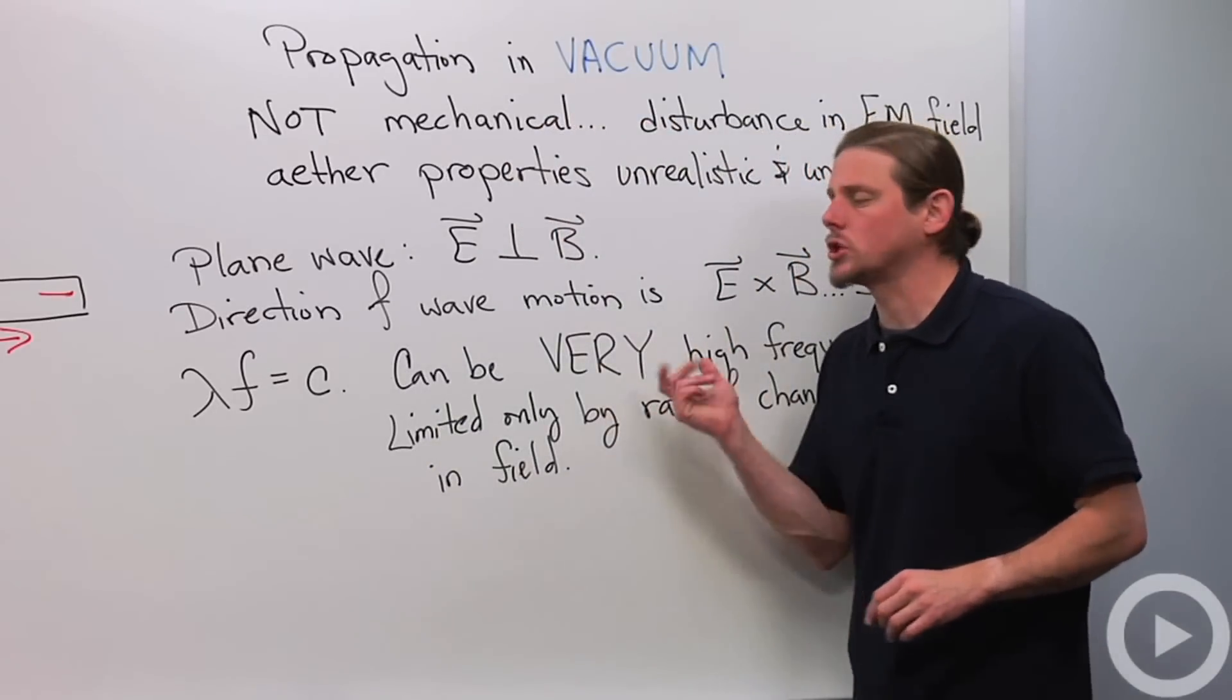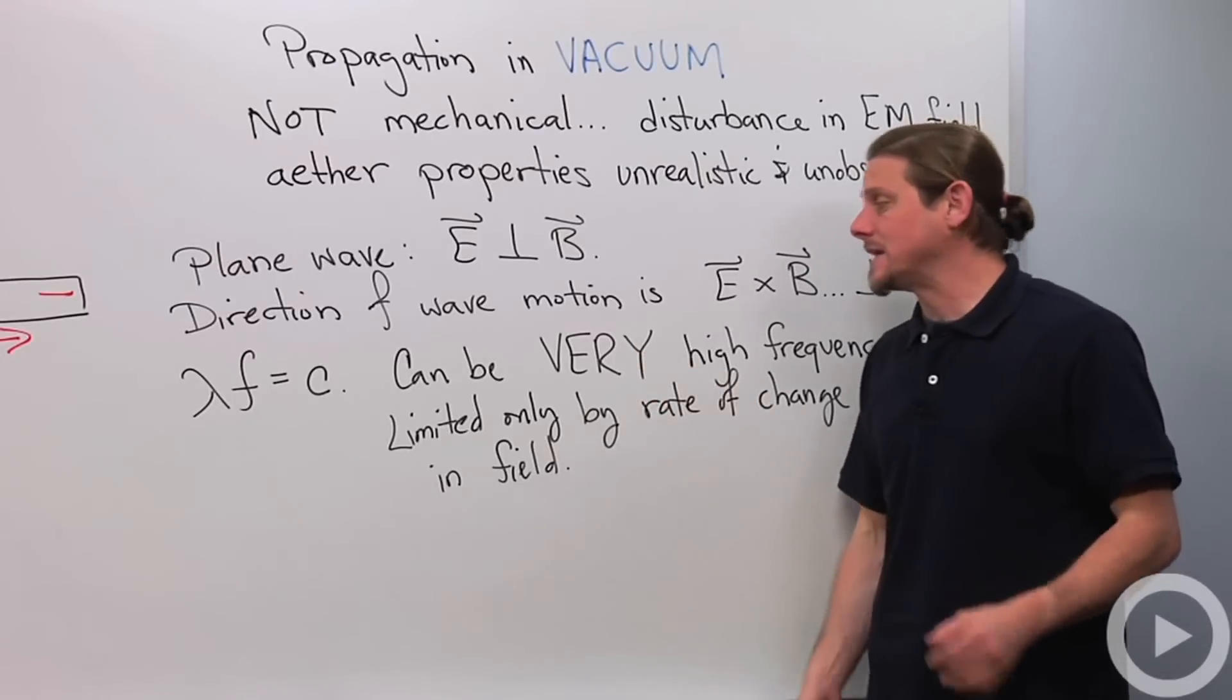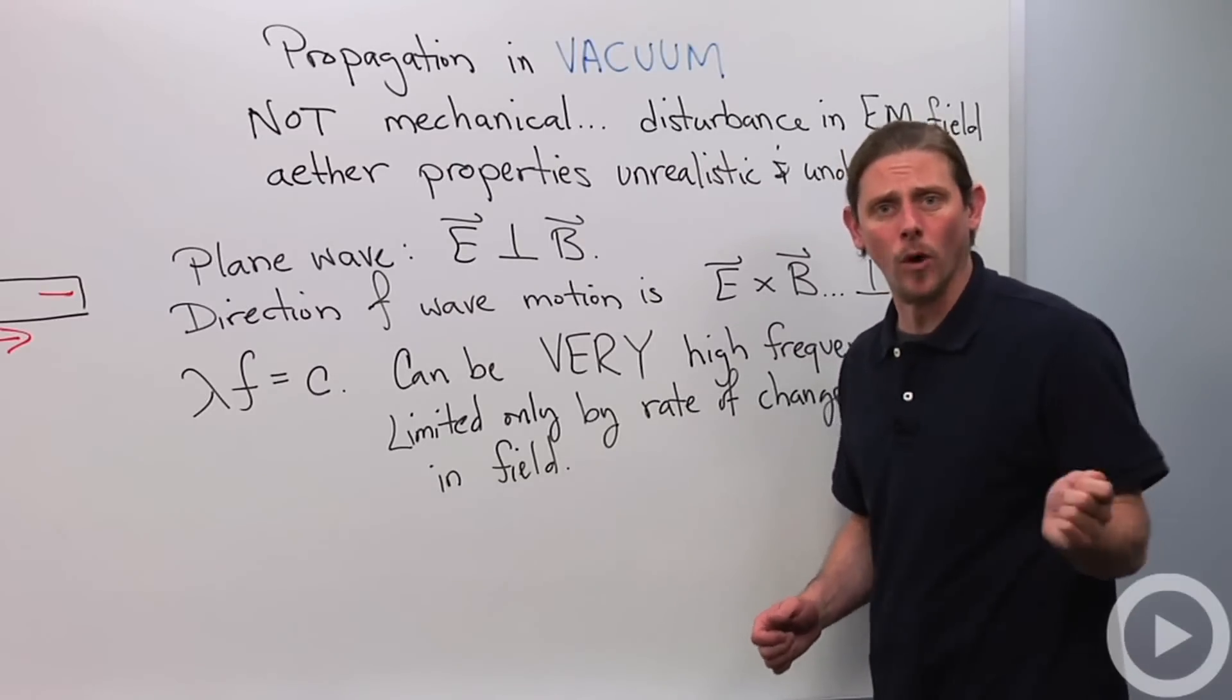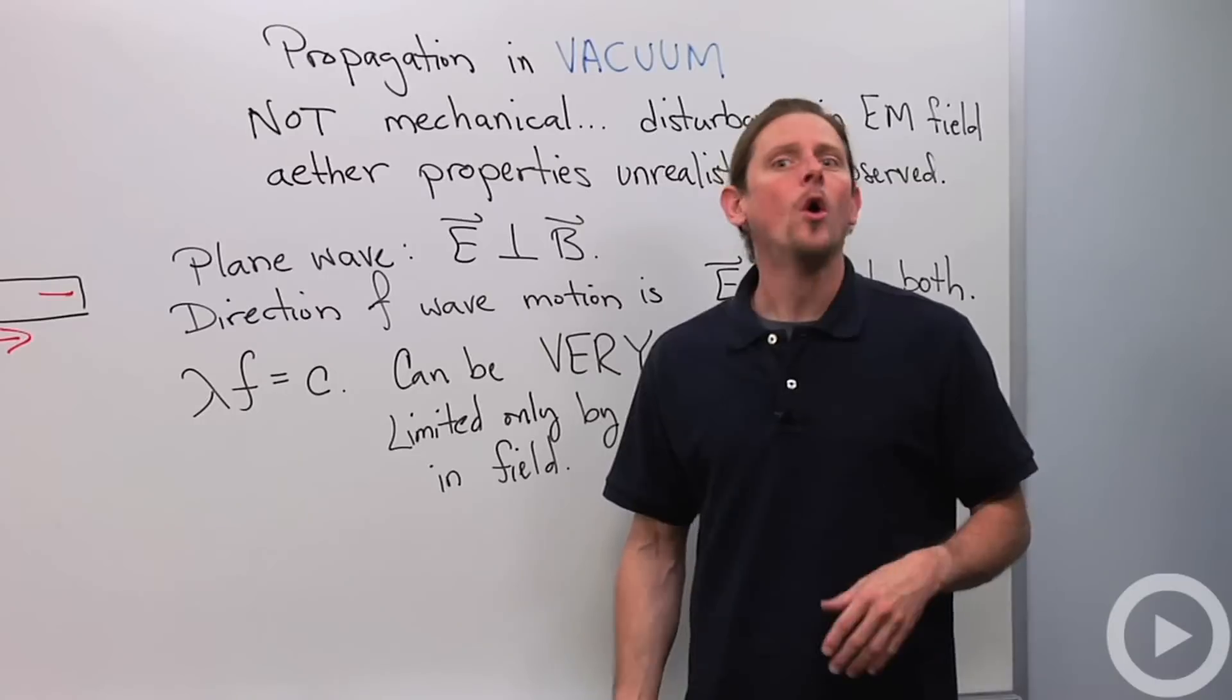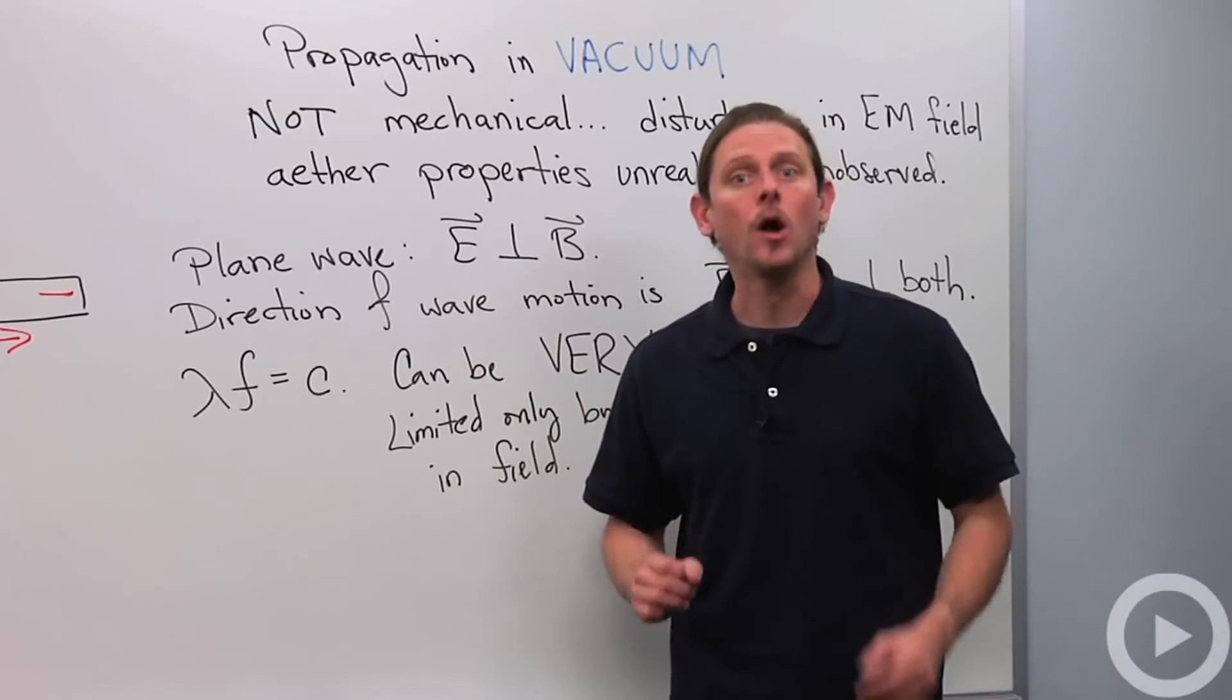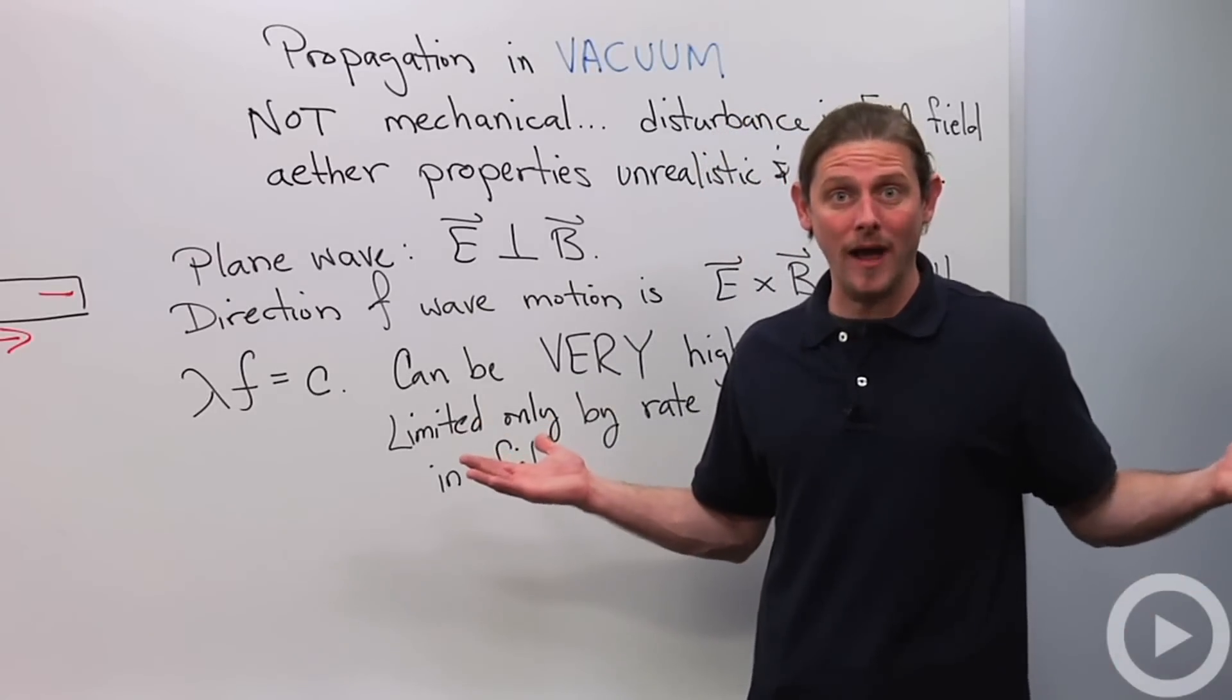this is just associated with disturbances in the electric and magnetic fields, which are not media. So that means that the frequency can be very high. It's limited only by how quickly we can move charges back and forth. So there are electromagnetic waves that are known with frequencies up to like 10 to the 22, 10 to the 24 oscillations per second, which is way higher than any physical medium could sustain. So anyway, that's electromagnetic waves.